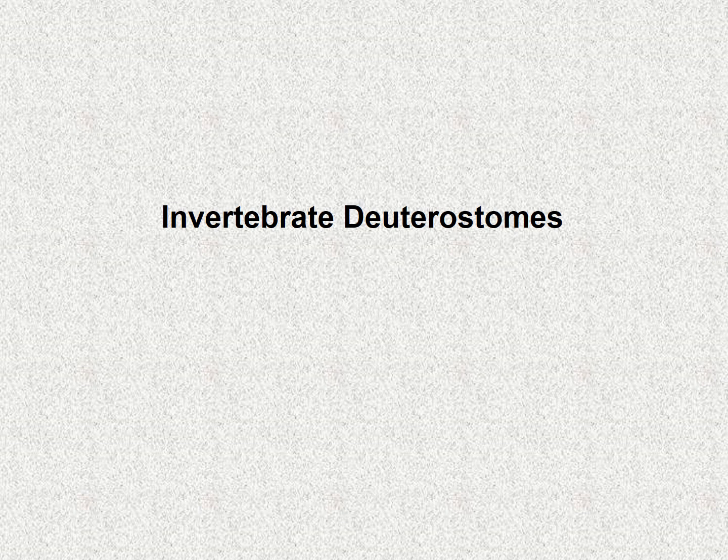Welcome to the introduction of deuterostomes. This segment is going to cover the invertebrates that are also deuterostomes. If you remember, we covered all of invertebrates before — however, they were protostomes. Now we're going to cover the deuterostomes. This is the end of chapter 33, and then we're going to be moving into chapter 34 when we move to chordates.